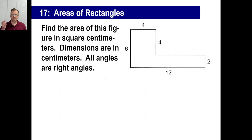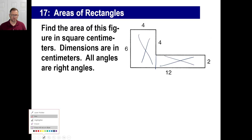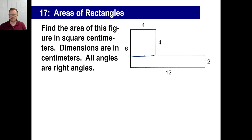Here's another one you'll see a lot this year: find the area of this figure in square centimeters. Dimensions are in centimeters and all angles are right angles, which will allow us to find missing sides. This shape is kind of funky compared to the ones we've done before — it's not just a simple rectangle. So we're going to have to do some cutting and slicing here. What we're going to do is chop this shape into two pieces. You can do it either way — chop it horizontally or vertically — either way is fine.